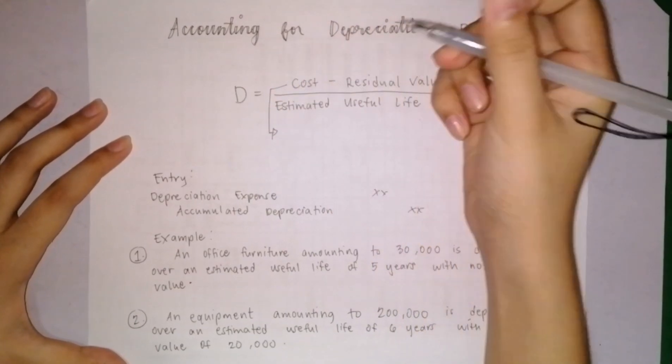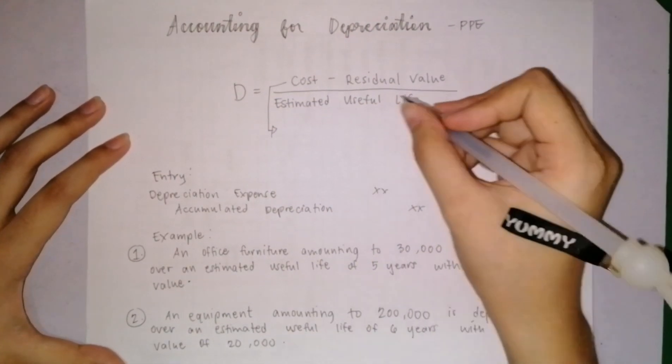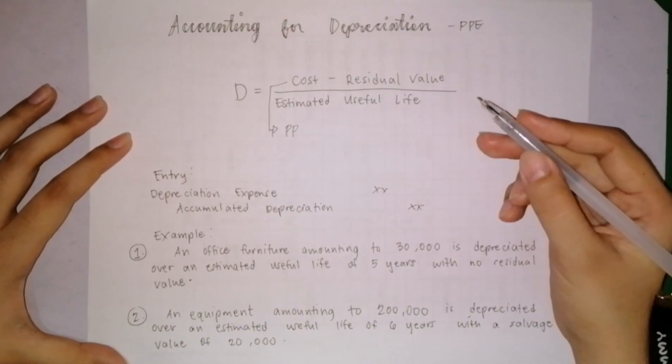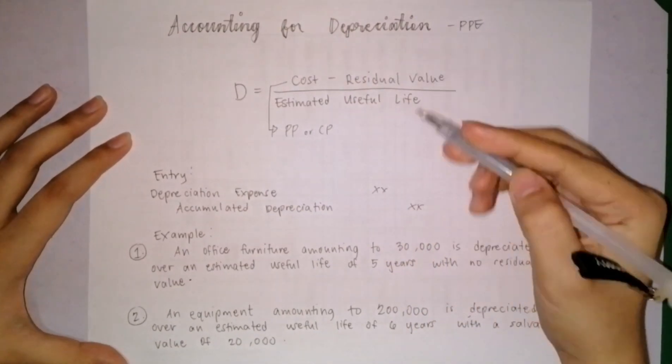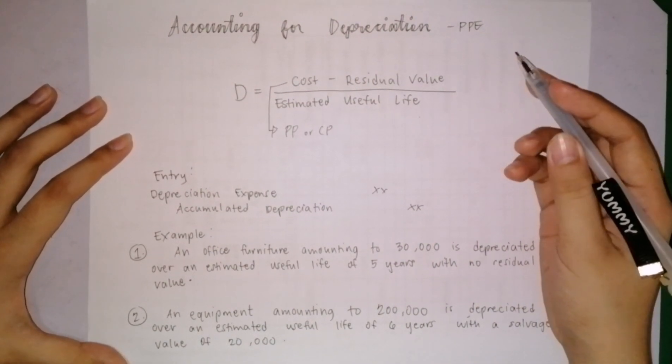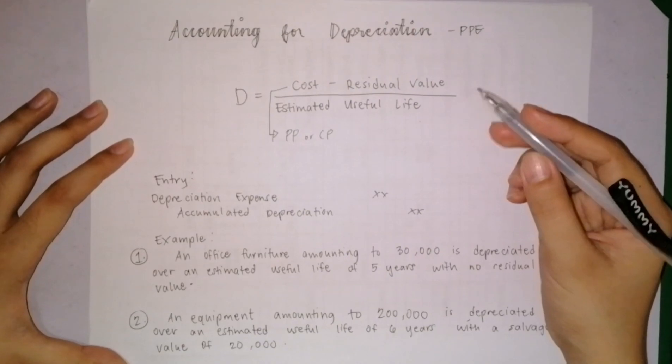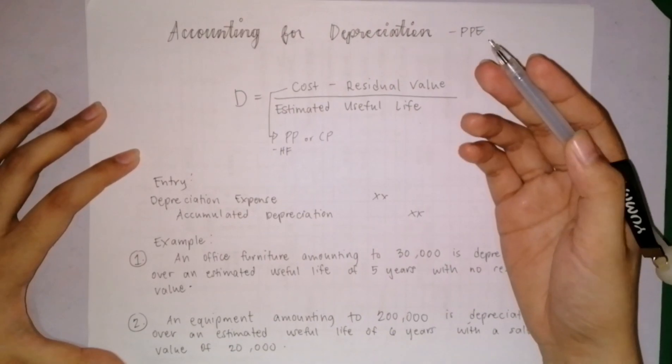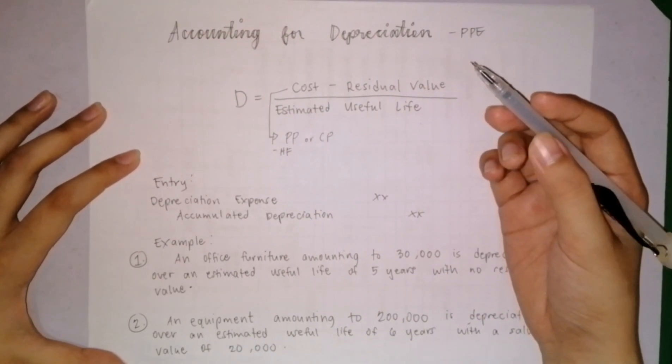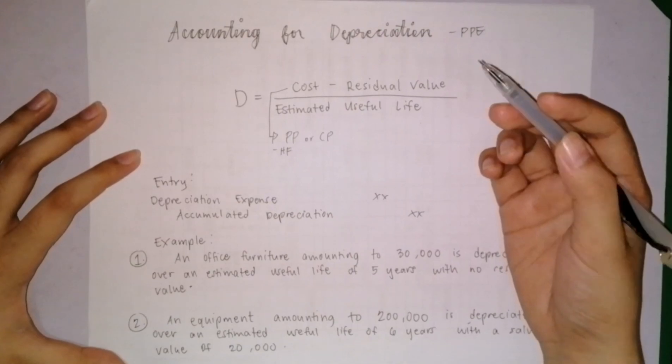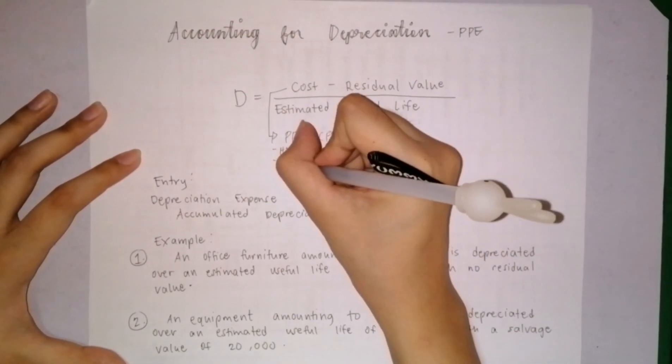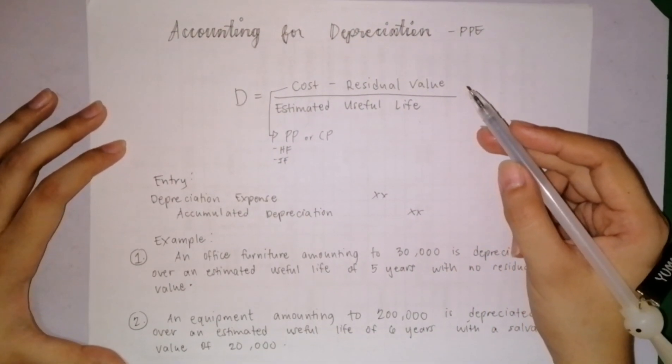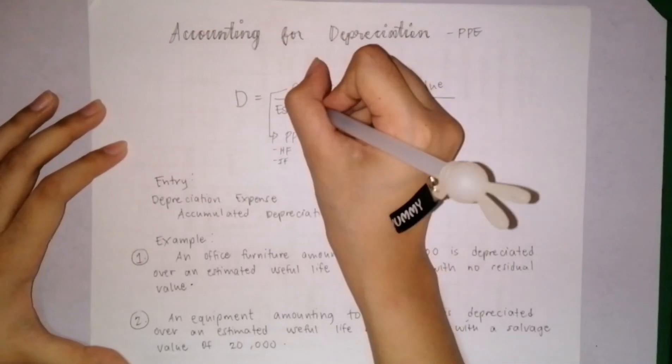Cost includes the purchase price. If you construct a building, the materials, labor, overhead, and other costs in the construction will be part of the construction price. In addition, cost to bring the asset to its present location for its intended use is part of the cost, such as handling fee, and cost to bring the asset to a condition necessary for its use, such as installation fee.